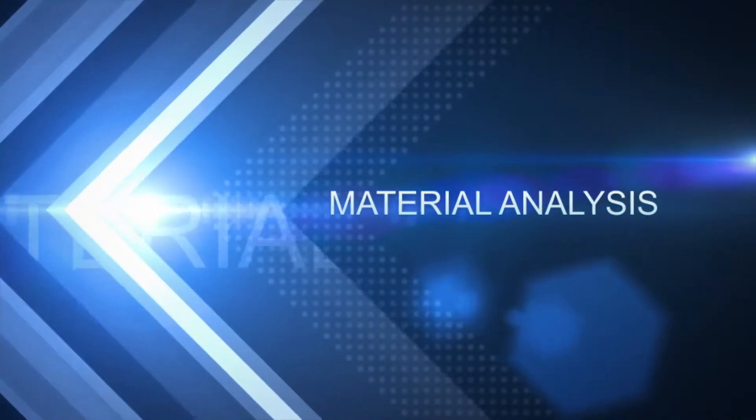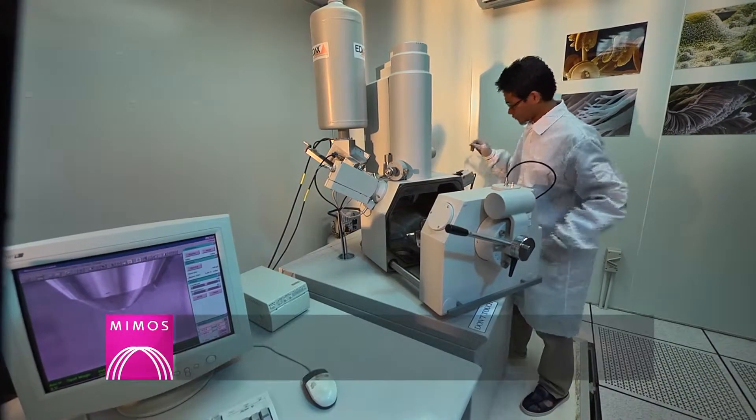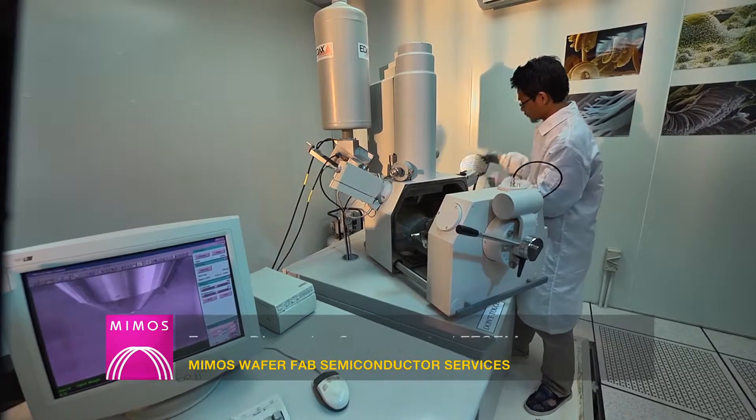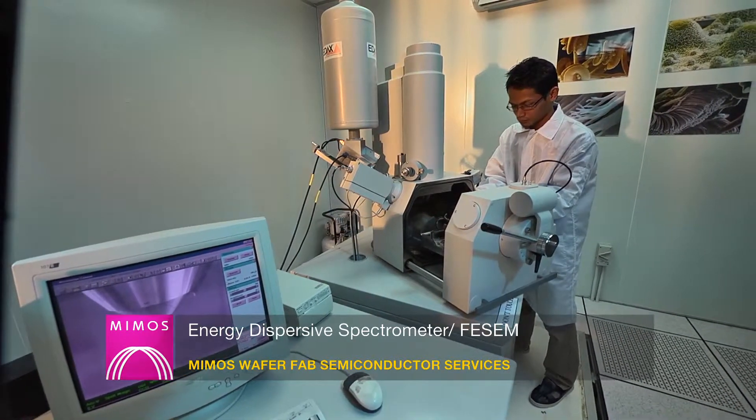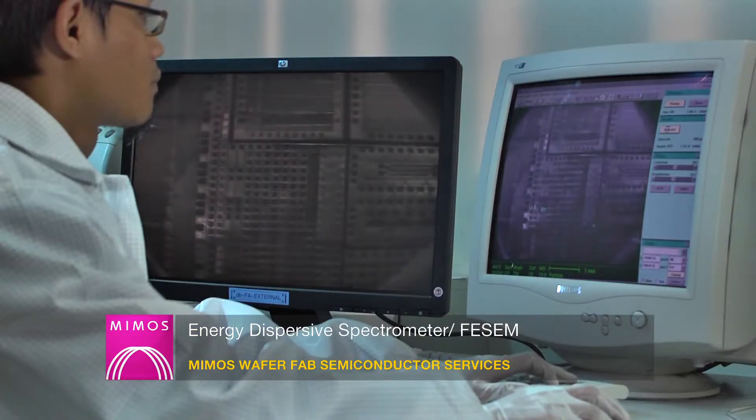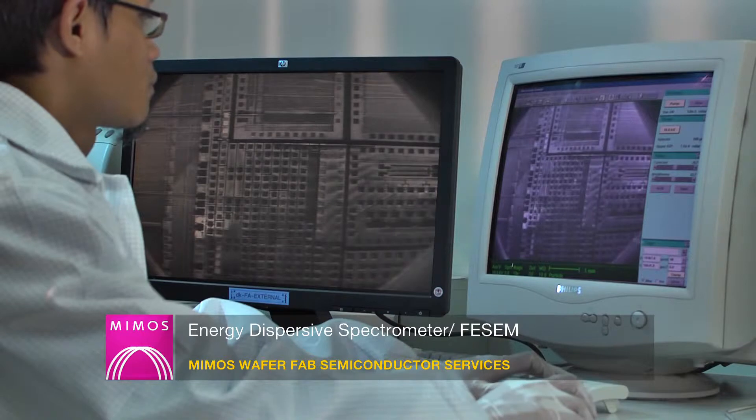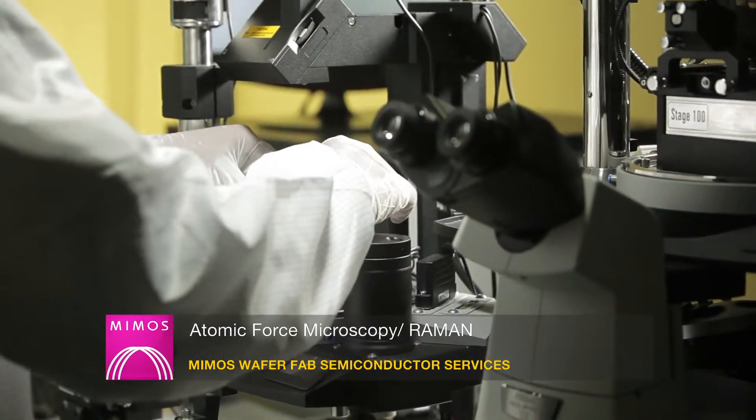Material analysis provides a better understanding of the elemental and chemical properties of failed devices. An attachment to the FEG scanning electron microscope is an energy dispersive spectrometer. The system has the capability to determine and quantify the composition of the elements and its compound.